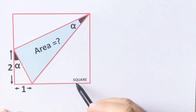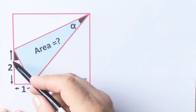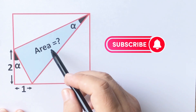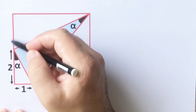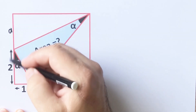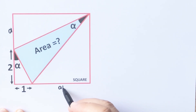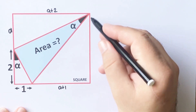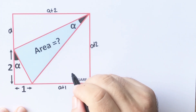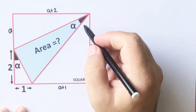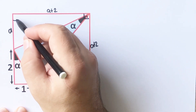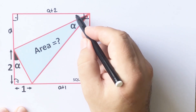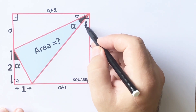Hello everyone. In this video we have one square, and here is a second one. These two angles are equal, and the area of the blue shaded triangle is asked. First step: let's call here a unit. This length must be a plus one, and here must be a plus two. This length is also a plus two. These angles are 90 degrees because of the square. Let's call here theta, and this angle I'm going to call beta.